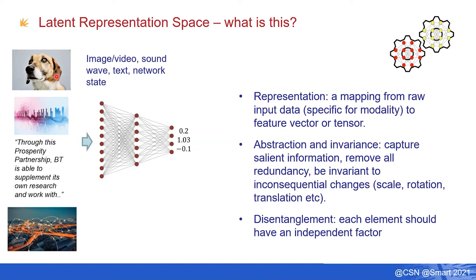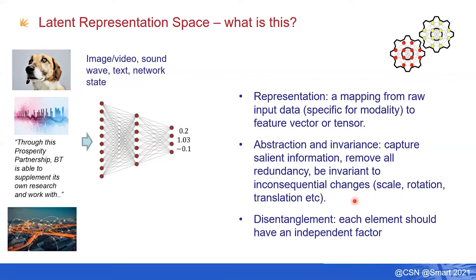Another important property on my wish list is disentanglement — that the various aspects of the representation correspond to independently varying factors. Now for a slightly more mathematical view: if I look at an image, I'm interested in its semantic content, but what I actually receive is data X — pixels. Data X is not the same as semantic content. I want to go from pixels to an approximation of that semantic content.